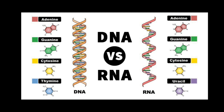In DNA, there are nitrogenous bases attached to the backbone. DNA is called a double strand, and RNA is called a single strand. This is one key structural difference between them.